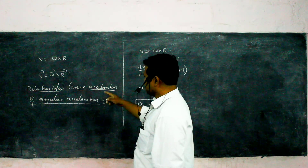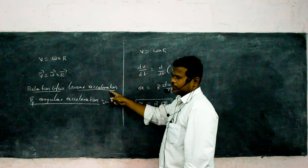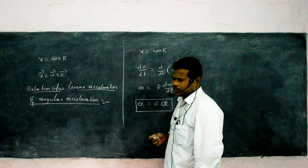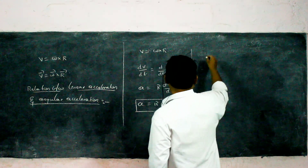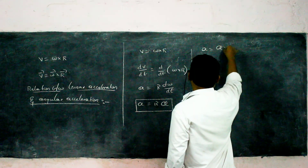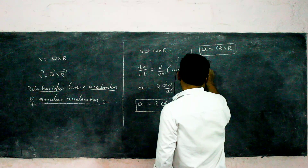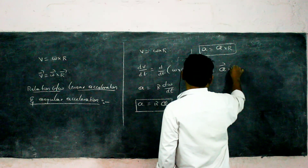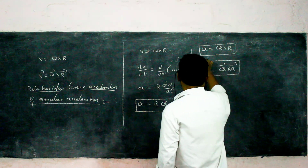From this relation, a is linear acceleration and α is angular acceleration. We can write a = αR, or in vector form, a⃗ = α⃗ × R⃗. This is the relation between linear and angular acceleration.